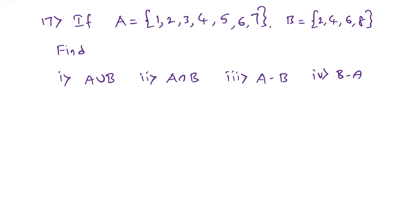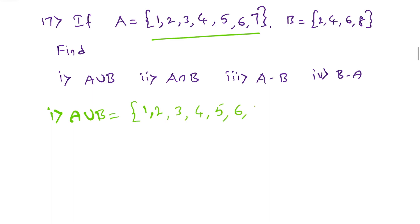Next question: if set A = {1,2,3,4,5,6,7} and set B = {2,4,6,8}, find A union B, A intersection B, A minus B, and B minus A. For A union B, write all elements from set A and set B with no repetition. From A: 1,2,3,4,5,6,7. From B: 2,4,6 are already written, so add 8. So A union B = {1,2,3,4,5,6,7,8}.